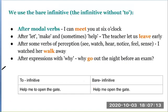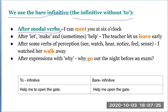Another type is the bare infinitive, where the infinitive is used without 'to.' It is used after modal verbs — for example: I can meet you at six o'clock. After 'let,' 'make,' and sometimes 'help' — for example: The teacher let us leave early. After some verbs of perception such as see, watch, hear, notice, feel, sense — for example: I watched her walk away.